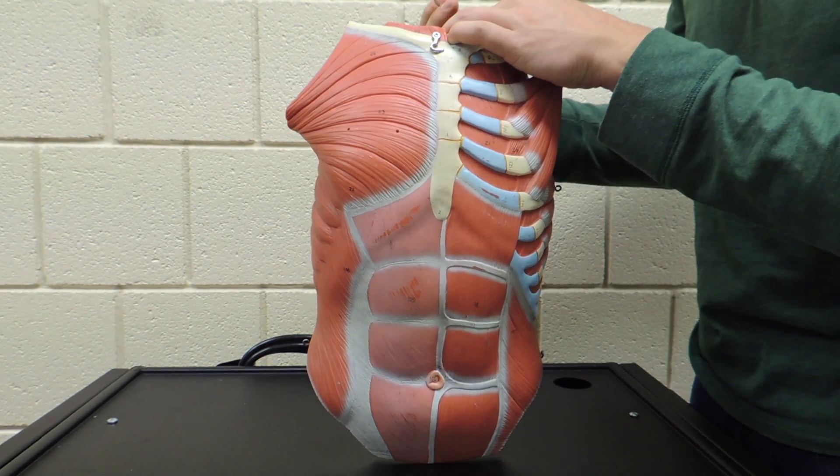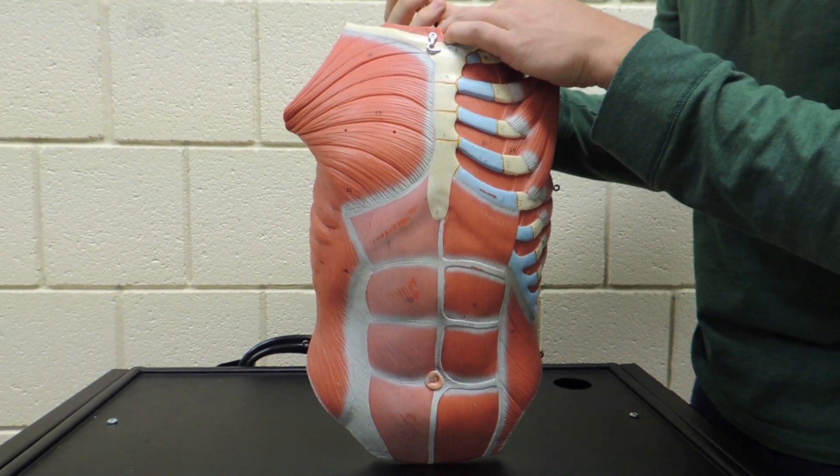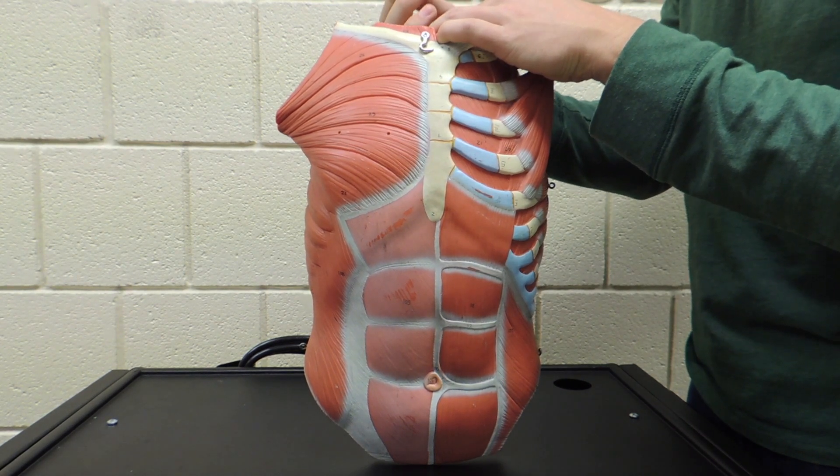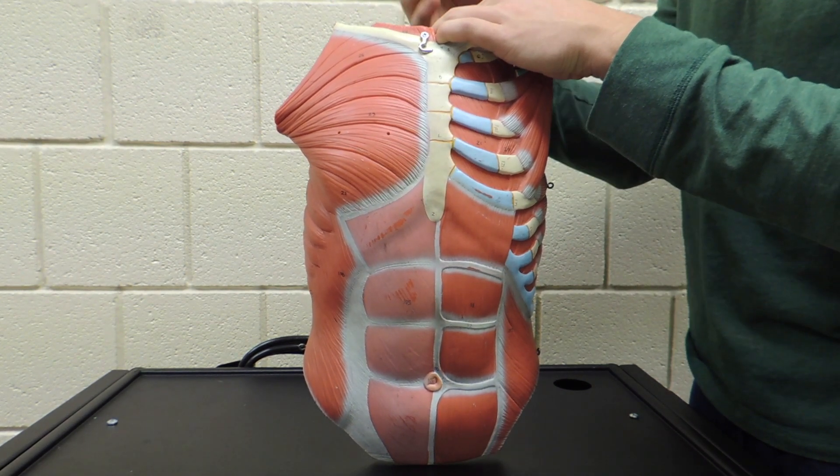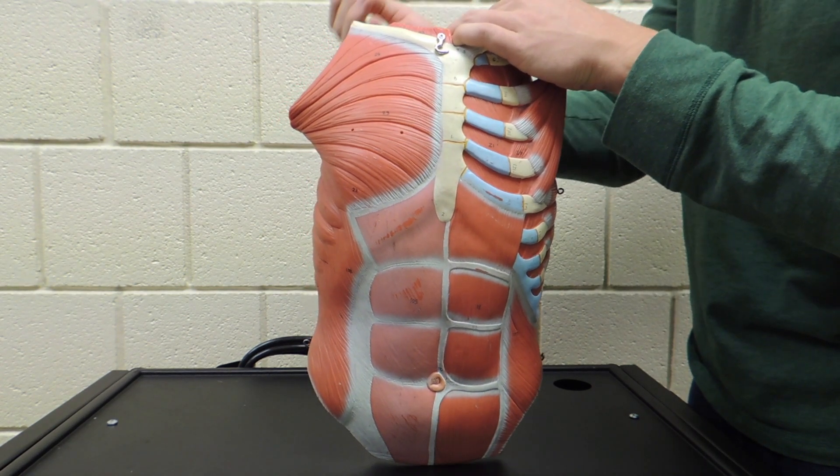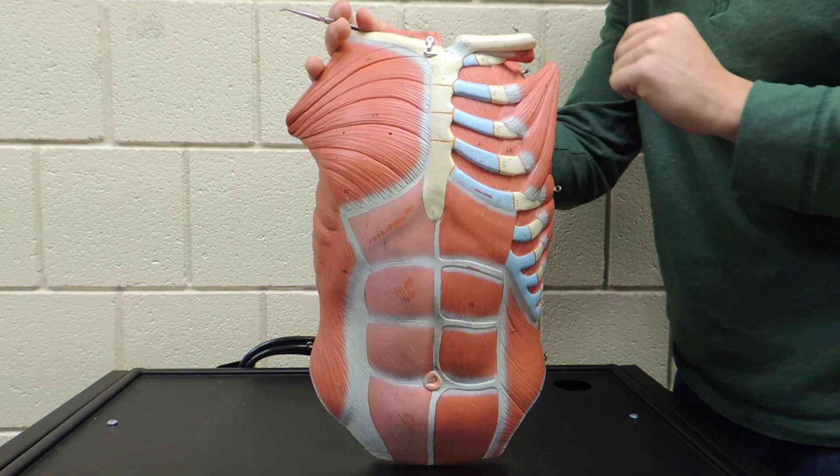In this video we're going to be doing the muscles of the chest and abdomen. The first portion will be dealing with muscles you need to know for fall A&P, and the second portion I'll go over the muscles you will need to identify in the spring portions of A&P.